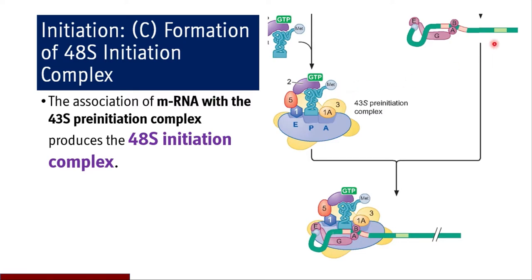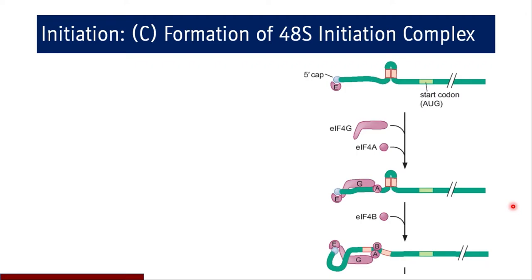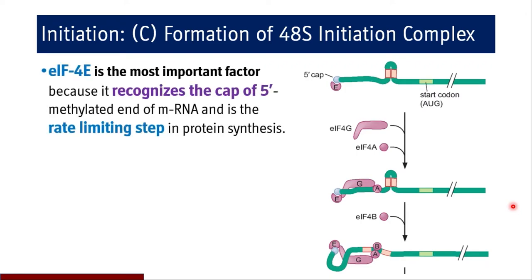The association of mRNA with the 43S pre-initiation complex synthesizes the 48S initiation complex, which has the 40S subunit, the initial EIF1A, EIF3, EIF5, and EIF1, plus EIF2-GTP and tRNA from the ternary complex, and mRNA with EIF4E, EIF4G, EIF4A, and EIF4B. In a simplified picture, this is how the 48S initiation complex looks.